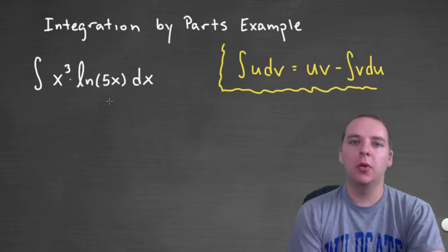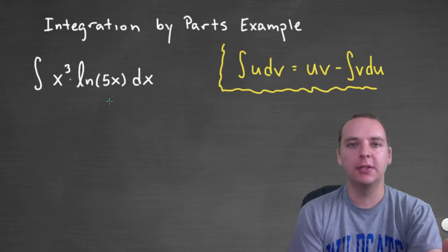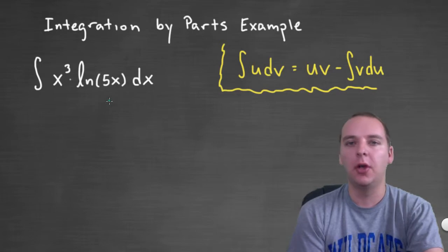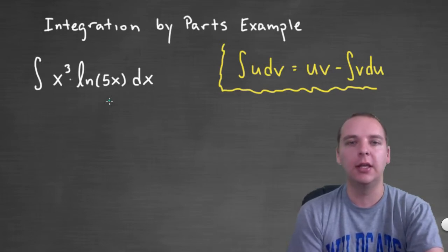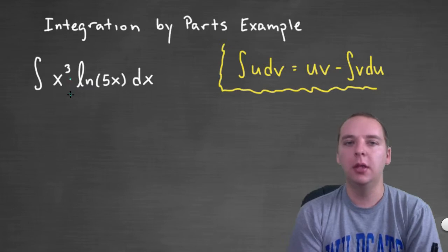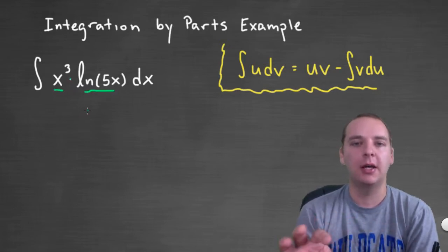Now the thing to remember is, whenever you see these on a homework or on a test, they're not going to tell you that it's integration by parts. There should be something in this integral that tells us this is probably integration by parts as opposed to u substitution or another technique. And what tips me off that this could be integration by parts is the fact that there's a product of something times something.